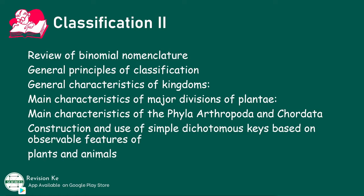We will also describe the main characteristics of classes of Arthropoda and Chordata, use observable external features to construct simple dichotomous keys of plants and animals, and finally, use already constructed dichotomous keys to identify organisms. That's a lot of fun, and you don't have to miss that — make sure you subscribe to this channel so that you're notified when we upload that class.